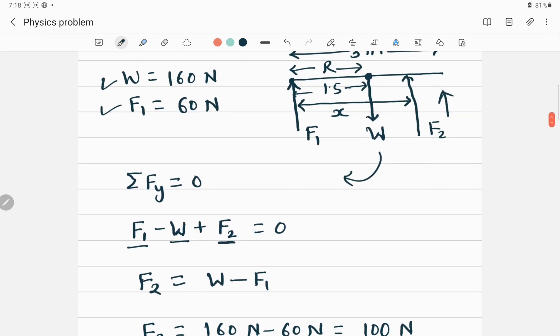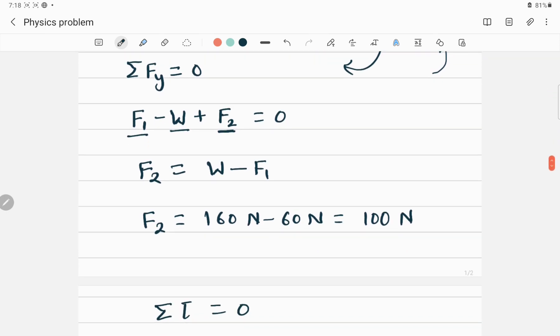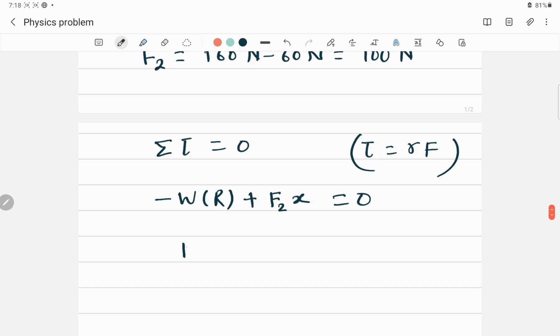So this one, the force F2, this is trying to apply anti-clockwise torque. That's why we can say this is positive. And the force F2, how far it is from this one. Because torque τ is equal to R, the distance multiplied by force. So we can apply this one and equal to 0. So our goal is to find the x. So I can write down F2x equal to WR or x equal to WR divided by F2.